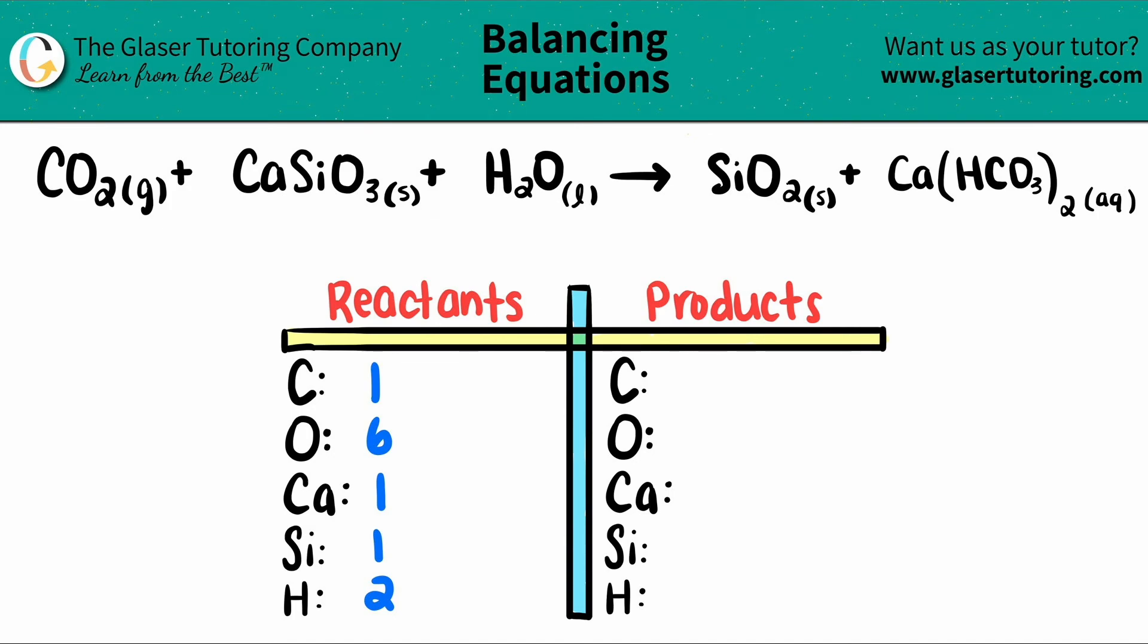Now let's just count how many we have on the right-hand side. I have a silicon, and I have one of them because there was no subscript. So one Si down here.